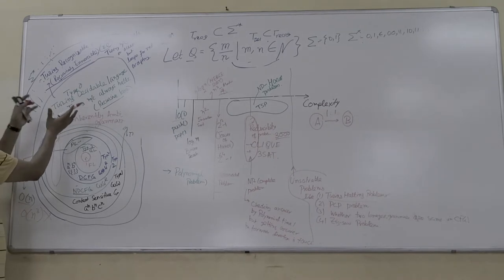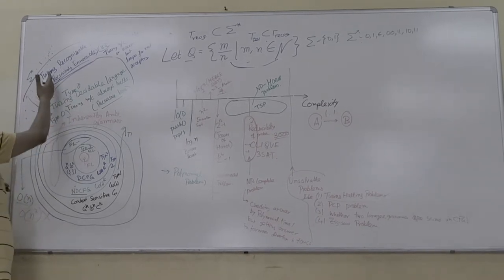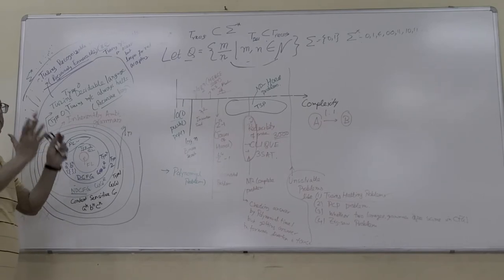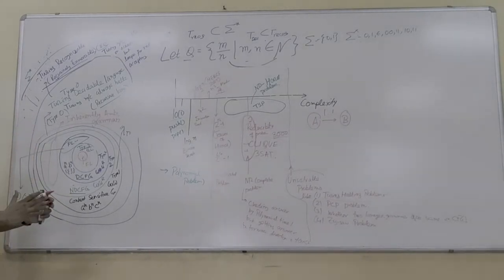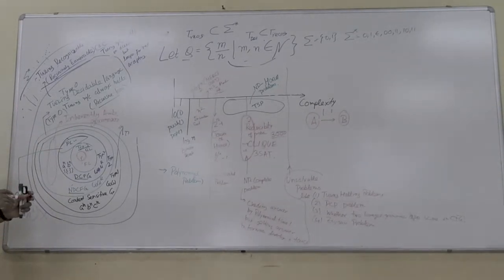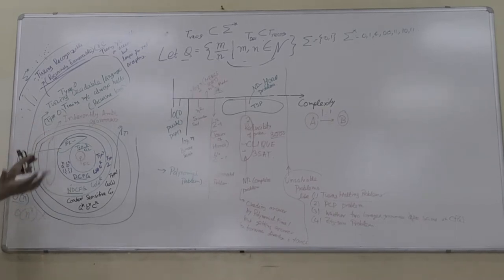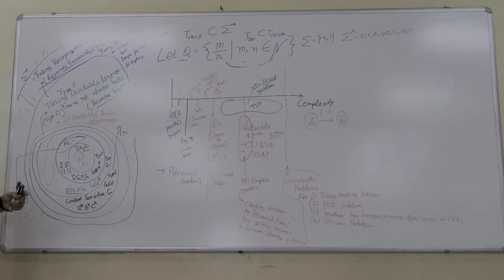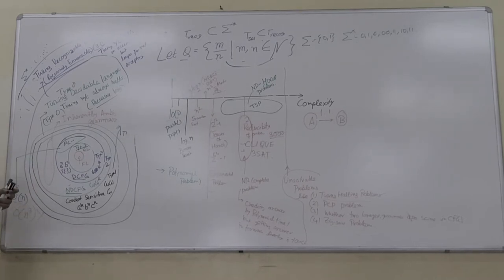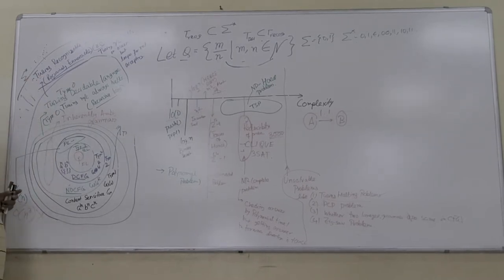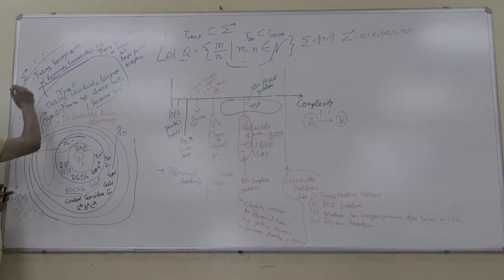If it stops, then it is Turing decidable. Which is a subset of Turing recognizable. What is Turing recognizable? If you stop in the accepted state, but if you give the complement of the language, which is not accepted, then it might go to the reject state or may loop.